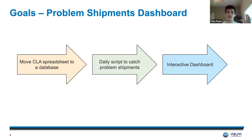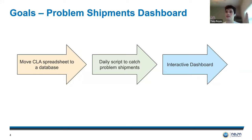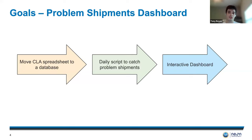The dashboard itself has a couple of steps. First, Jim, my mentor, and I had to create a database and move all of the existing CLA spreadsheet data into the database. After that, I developed a daily script job that would catch problem shipments by itself — it would check out the shipment, check if any samples had any problems, and if so, flag the shipment as a problem shipment. After that, I finished creating an interactive dashboard for Neon.